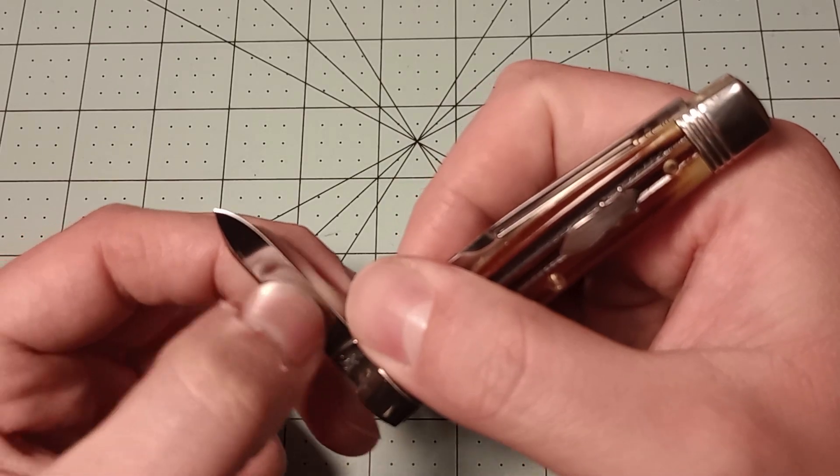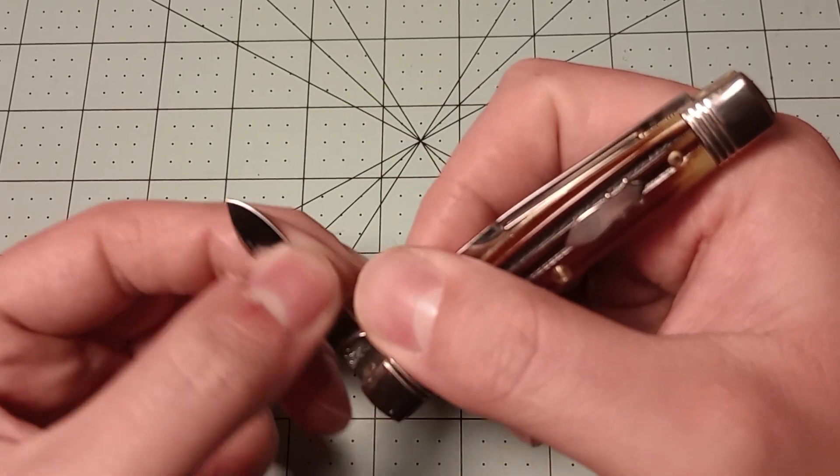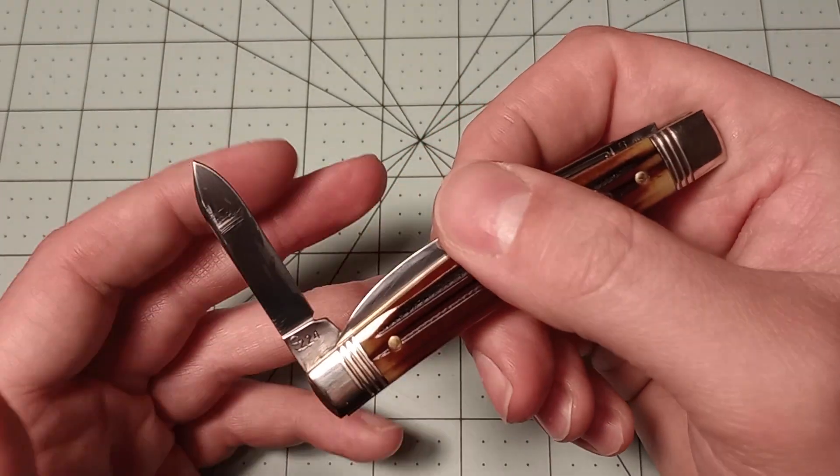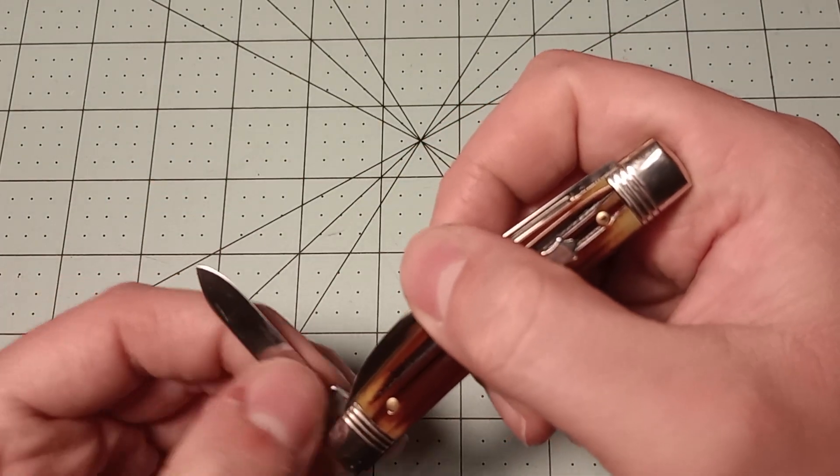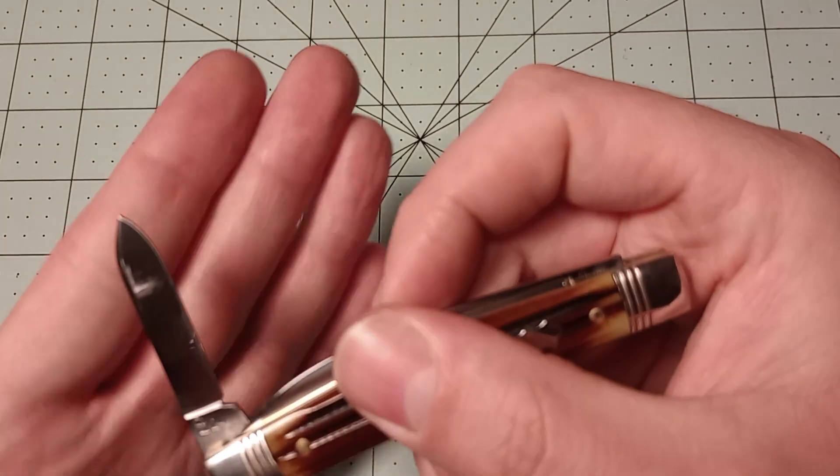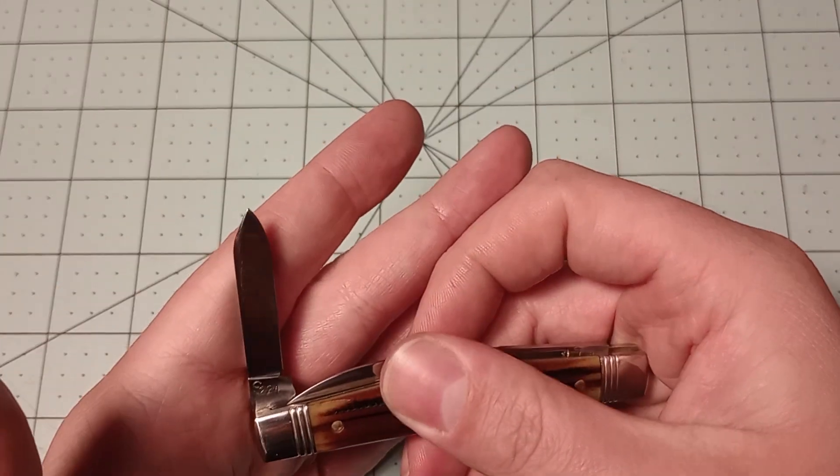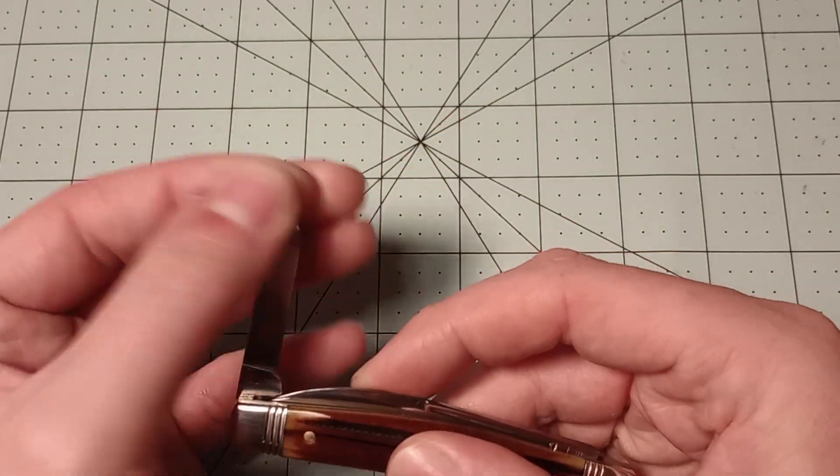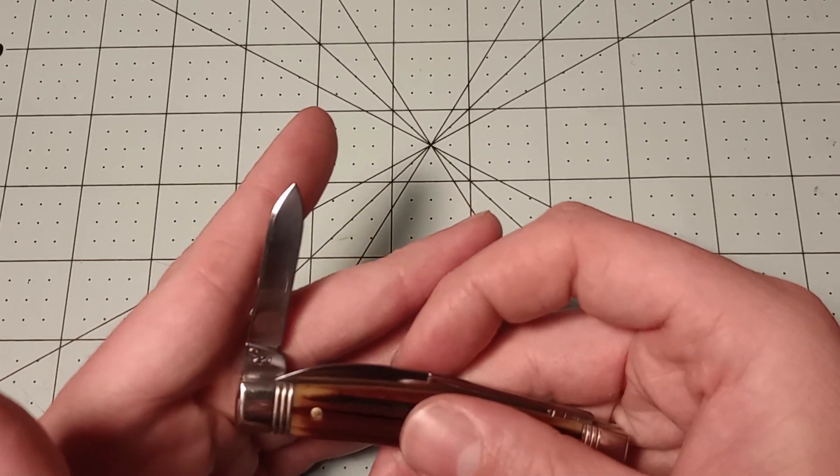There is a little bit—there is something on this blade. I'm trying to figure out what it is. But it's not easily wiping off. So I'm not sure what that is. That could be part of the cosmetic defect, too. I don't know. And it is rubbing. The blades do rub. It is a single backspring pocket knife. So I kind of expect that a little bit.